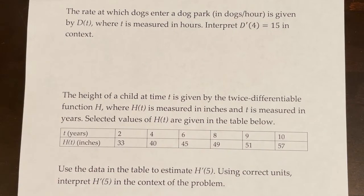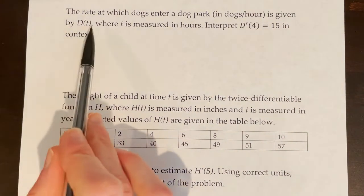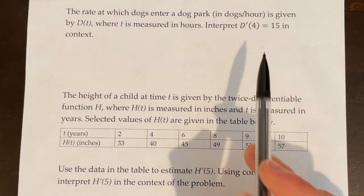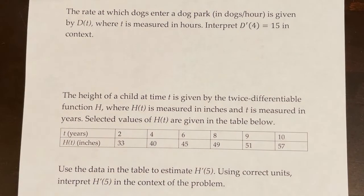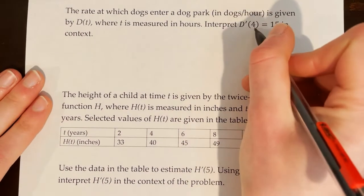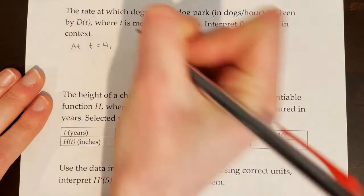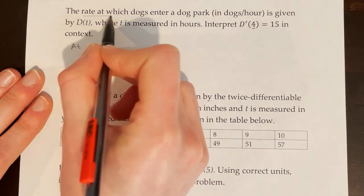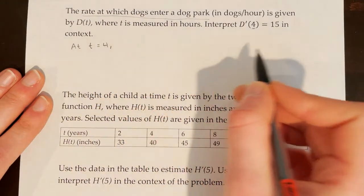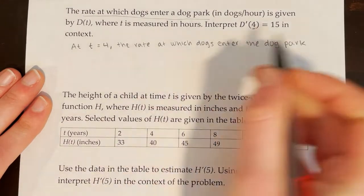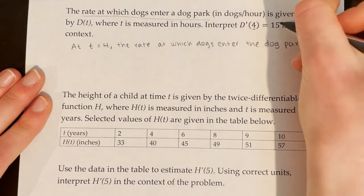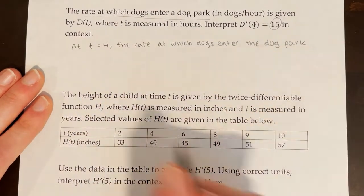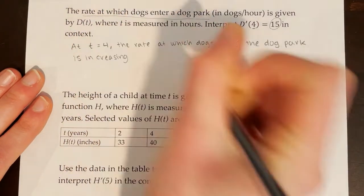The rate at which dogs enter a dog park in dogs per hour is given by d of t, where t is measured in hours. Interpret d'(4) = 15 in context. This one's a little different because the function d is already a rate, so when we talk about d prime, that's the rate at which the rate is changing. We still follow the same structure. At t is equal to 4, our dependent variable is the rate at which dogs are entering the dog park, and the rate at which dogs enter the dog park is increasing because the derivative value is positive.